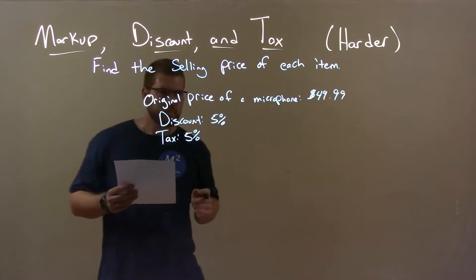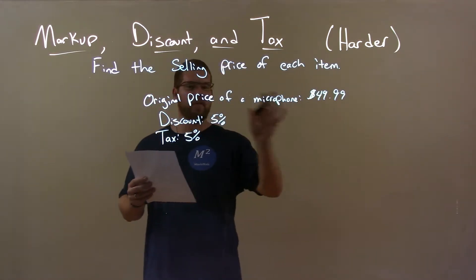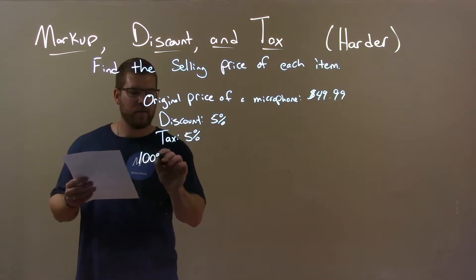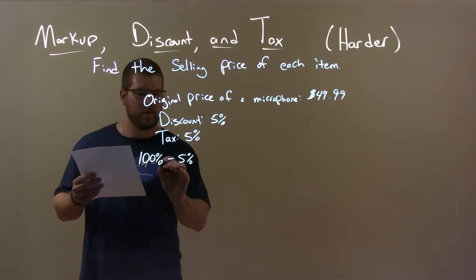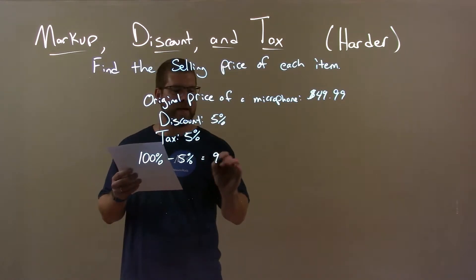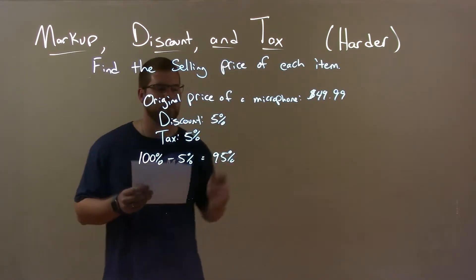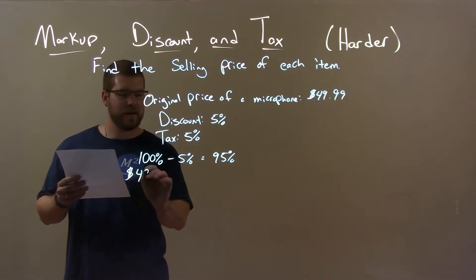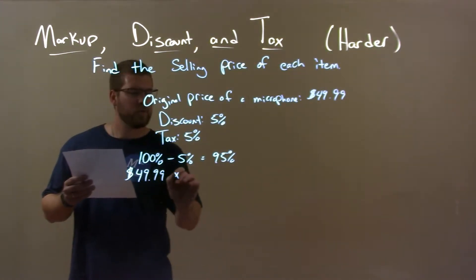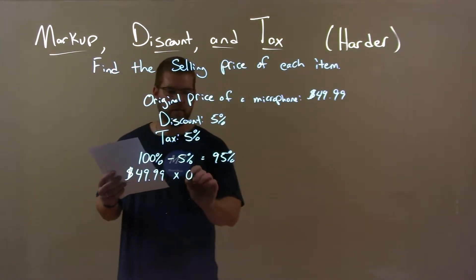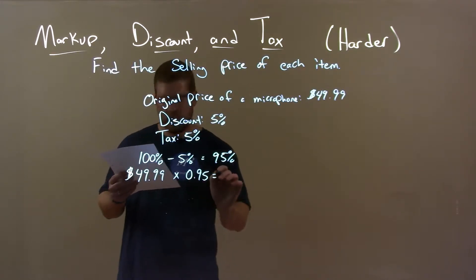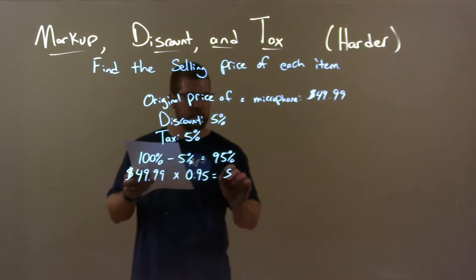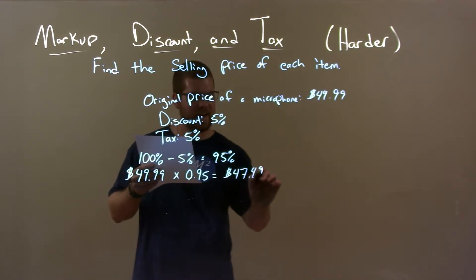First we take the original price and apply our 5% discount. A 5% discount, if we take 100% minus 5%, that 5% discount really means we pay 95% of the original price. So to calculate that, original price $49.99, and we multiply 95% as a decimal, 0.95. This gives us a cost or price here of $47.49.